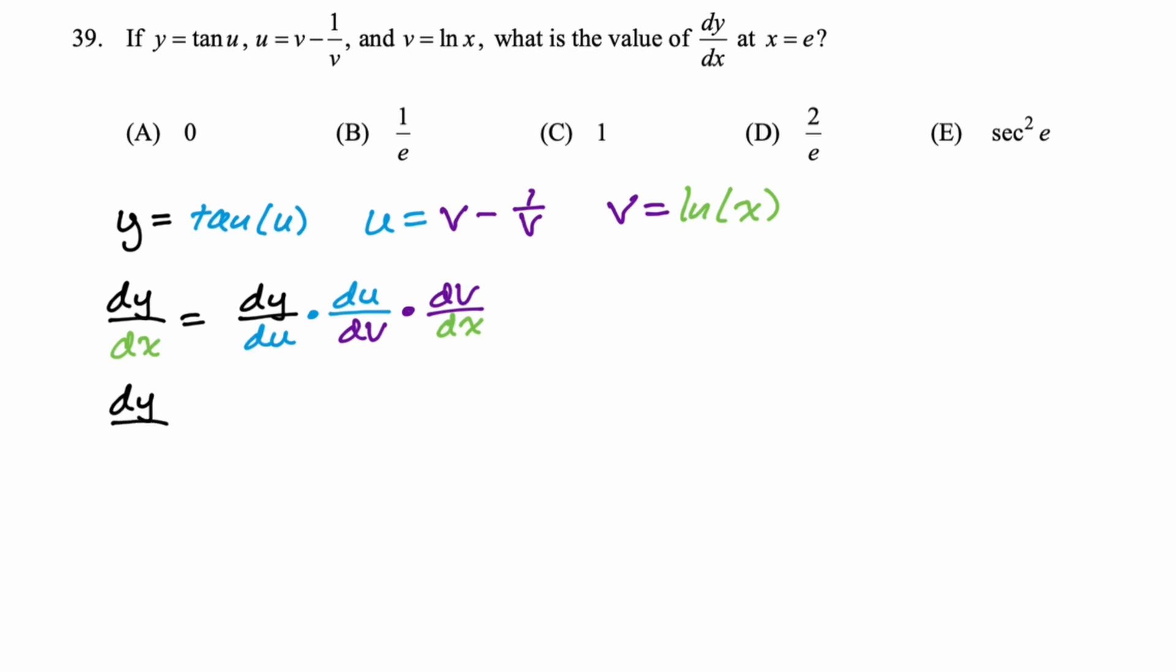So now we just have to find these things. So dy/du is the derivative of tangent, which is secant squared, so sec²(u). du/dv, the derivative, so u = v - 1/v. So think of that as v - v⁻¹. So the derivative of v is going to be 1, and then you get minus negative v⁻², which becomes plus 1/v². And then v = ln(x), and the derivative of that is 1/x.